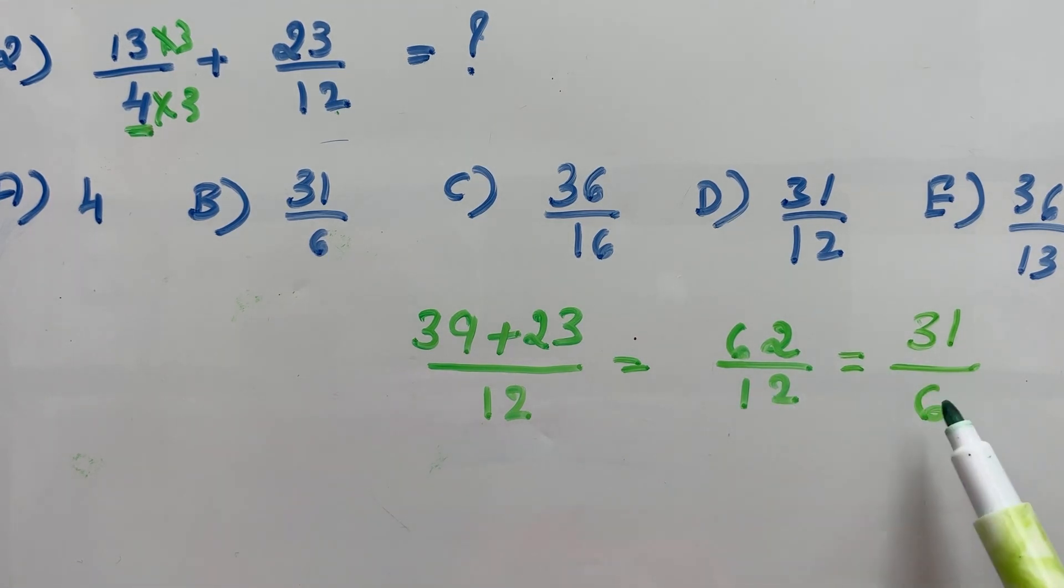The simplified form of 62 over 12 is 31 over 6. So option B is the correct option. See you in the next class. Bye bye.